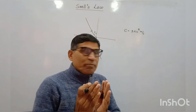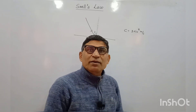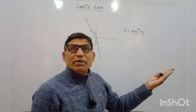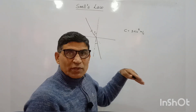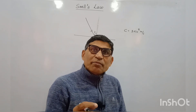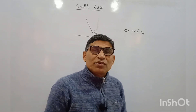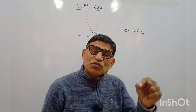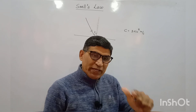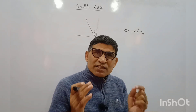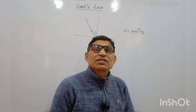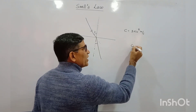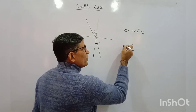Light becomes slower when it enters a denser medium. How much it becomes slow is measured by the refractive index. Suppose the speed of light becomes half — then the refractive index of the medium is 2. If the speed becomes one third, the refractive index is 3. So refractive index is simply the ratio of the speed of light in vacuum to that in the medium.